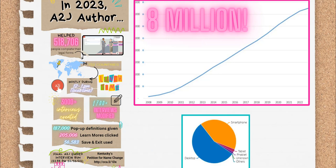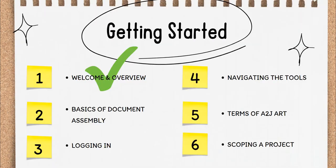We're so excited that you've decided to join this cohort of legal technologists tackling the access to justice crisis. Now that you have an understanding of the impetus behind automating court forms for self-represented litigants, why CALI created A2J Author, and what makes A2J Author special, make sure to move on to the next part of this Getting Started section and learn about the basics of document assembly.